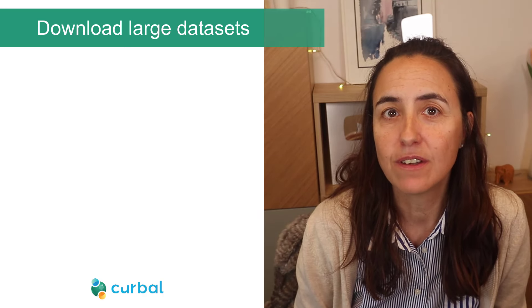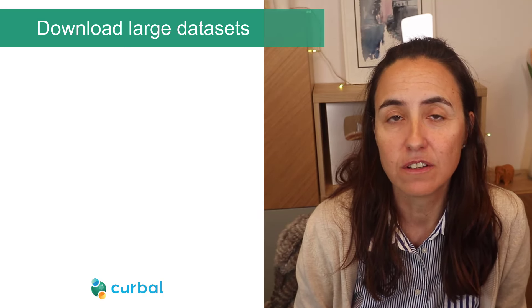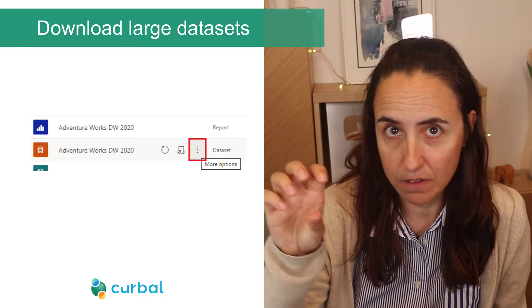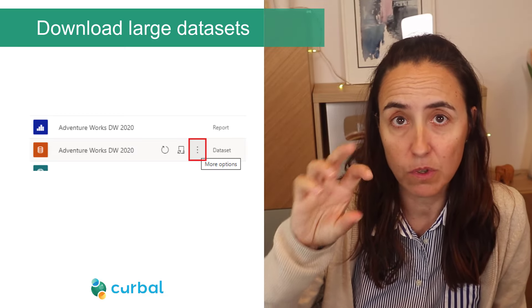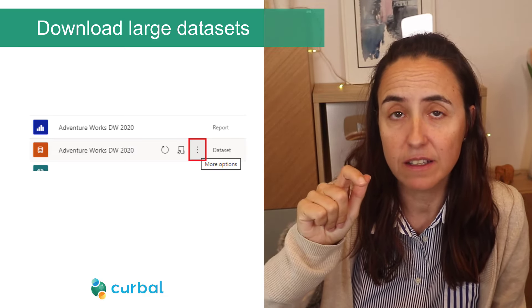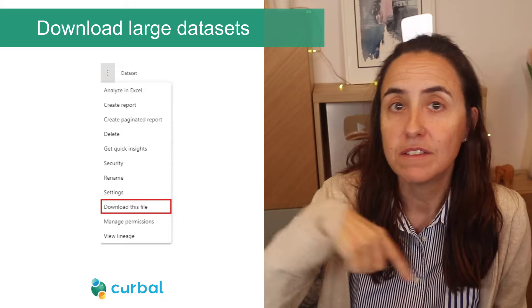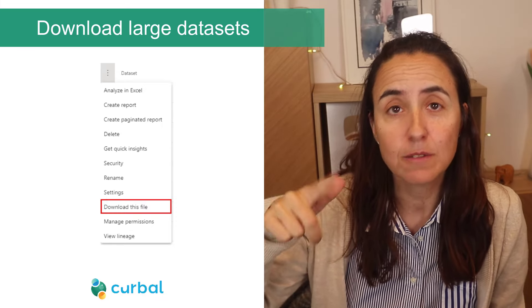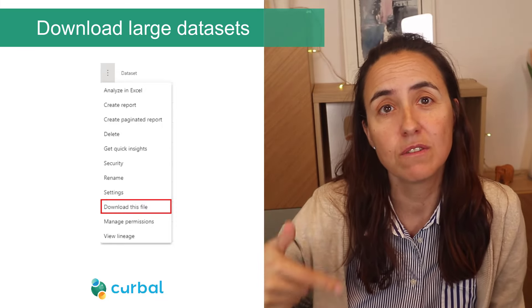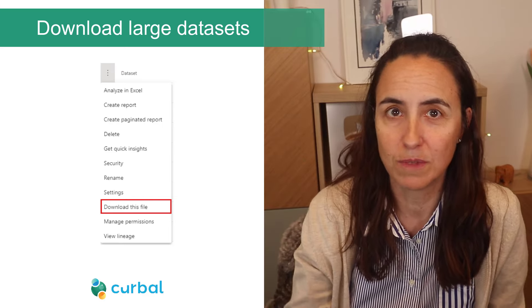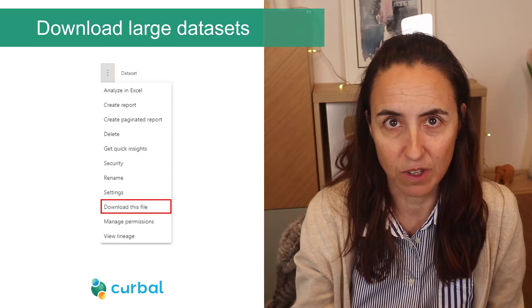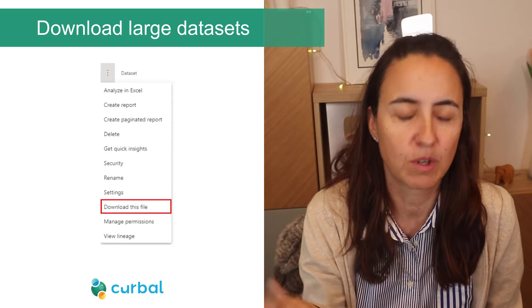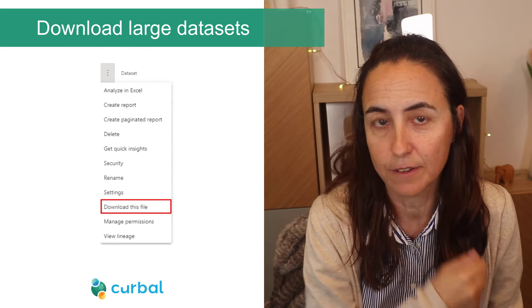On the modeling side, you can now download large semantic models. So you pick the semantic model you want, right-click, and if download doesn't show up on the list, it means that you hit one of the limitations, so you have to go to the documentation and figure out what it is and see if you can work around it.